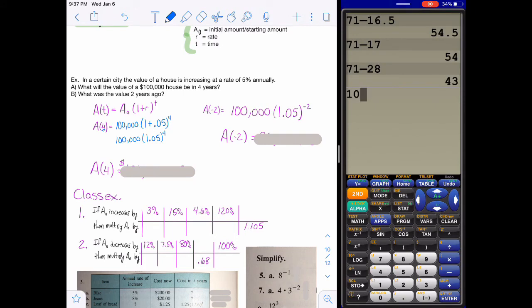All right, so we've got 100,000 times 1.05 to the 4. And that gives us then $121,550 and you'd have to round to 63 cents.